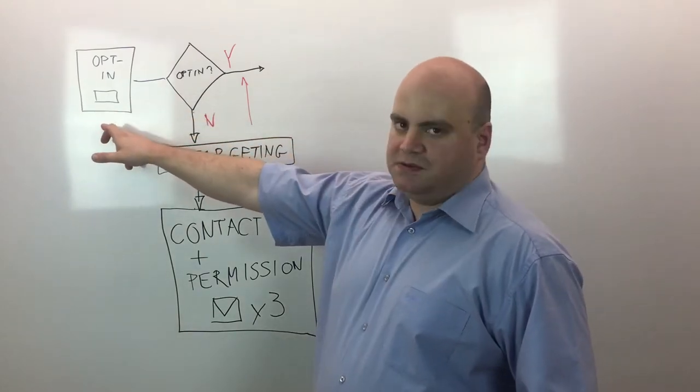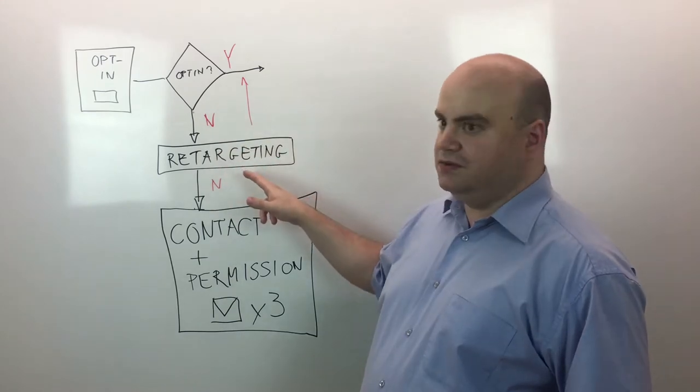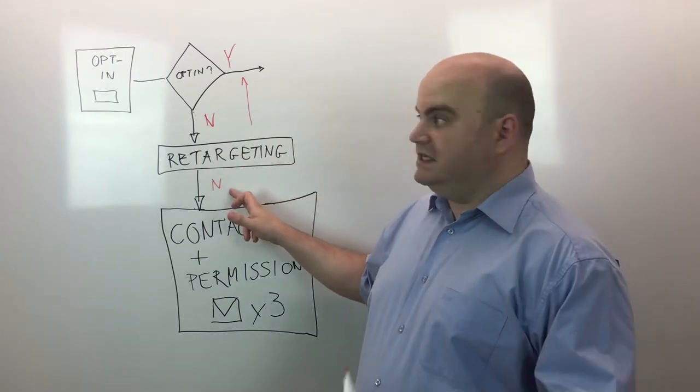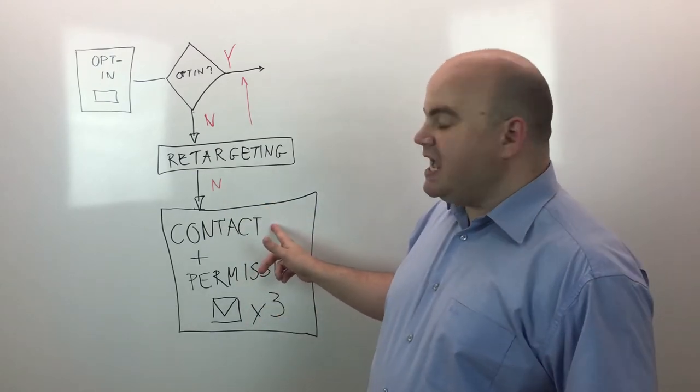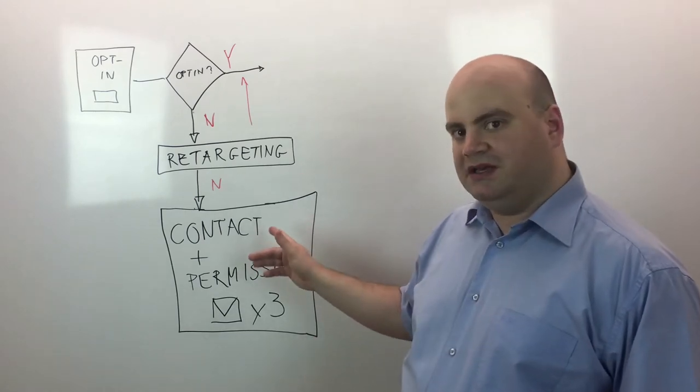So someone sees an opt-in page, he or she doesn't opt in. After that, you send them to a retargeting list and show some retargeting ads. They still don't opt in. What you do is you check their company and find contact details for your company. And I will show you how to do it automatically, very fast.